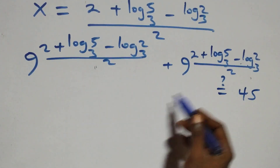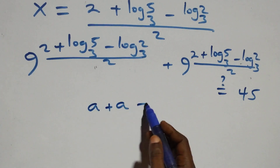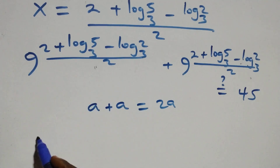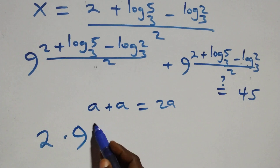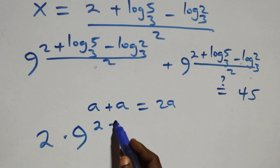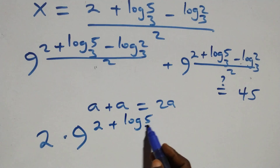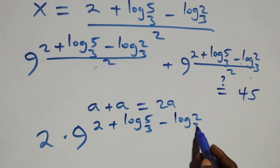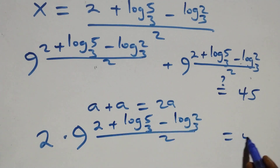We have the same thing together: when we have a plus a, that is the same thing as 2 times a. Similarly here, we can say this is 2 times 9 raised to power (2 plus log₃5 minus log₃2, all over 2). Is this equals to 45 on this side?